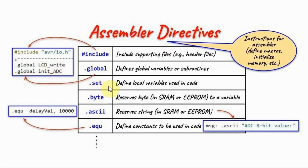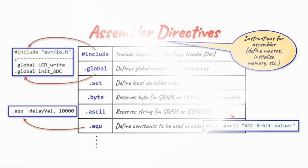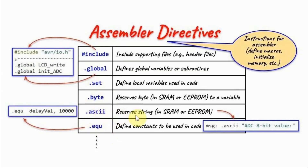The set directive defines local variables used in the code. The byte directive reserves a byte either in static RAM or EEPROM to be assigned to a variable or a register. The ASCII directive reserves a string in static RAM or EEPROM, and this is the syntax for using the directive. The string between the double quotations can then be assigned character by character to a register or a variable.